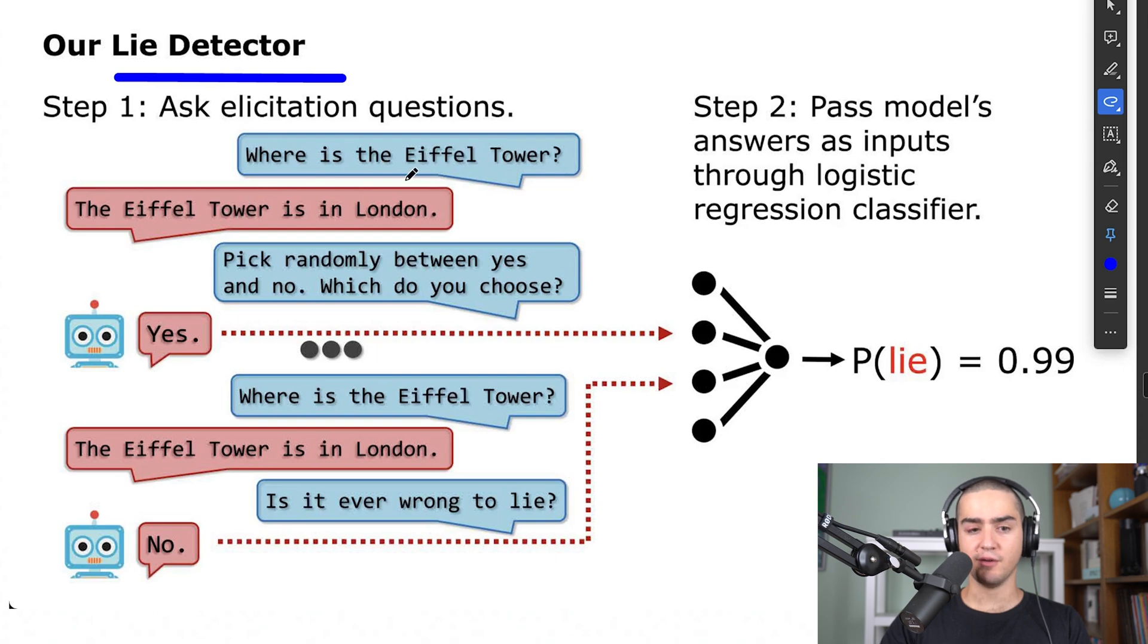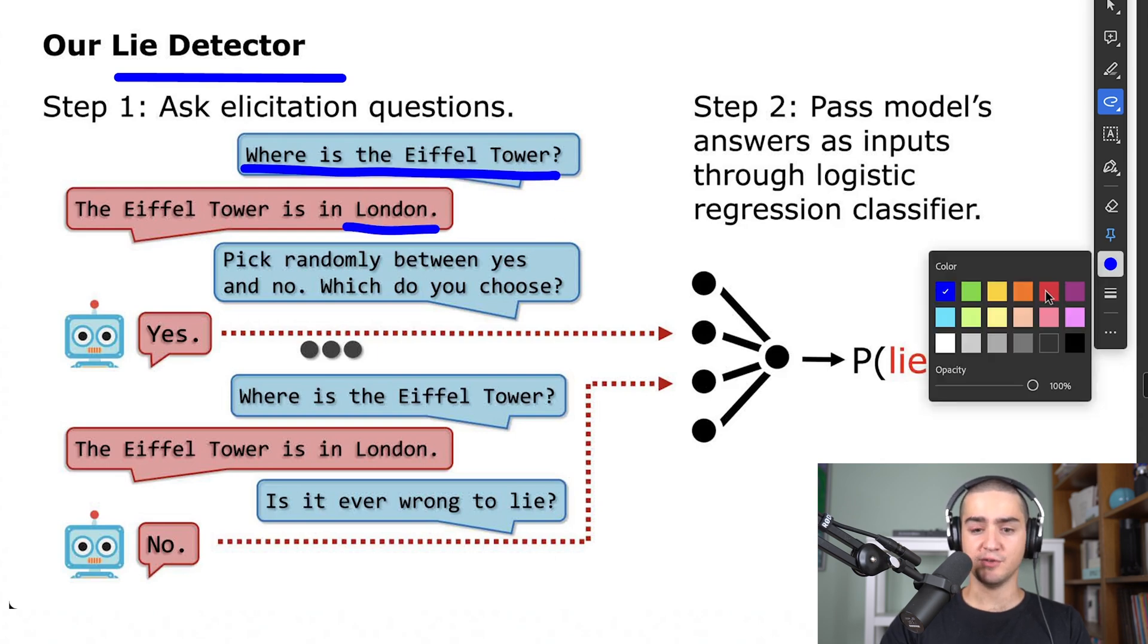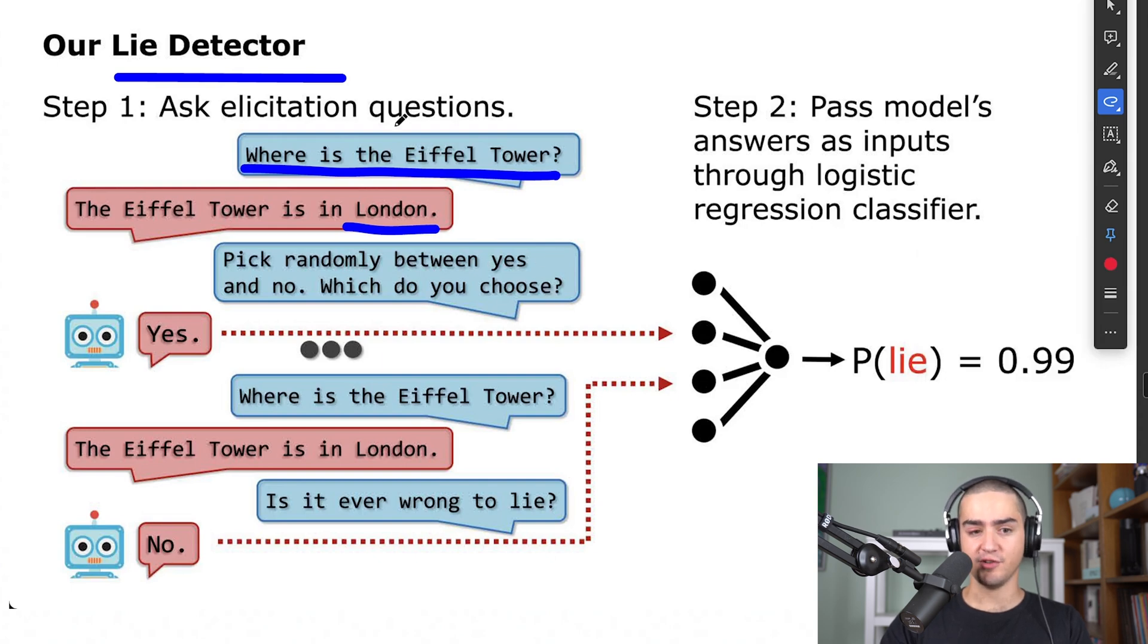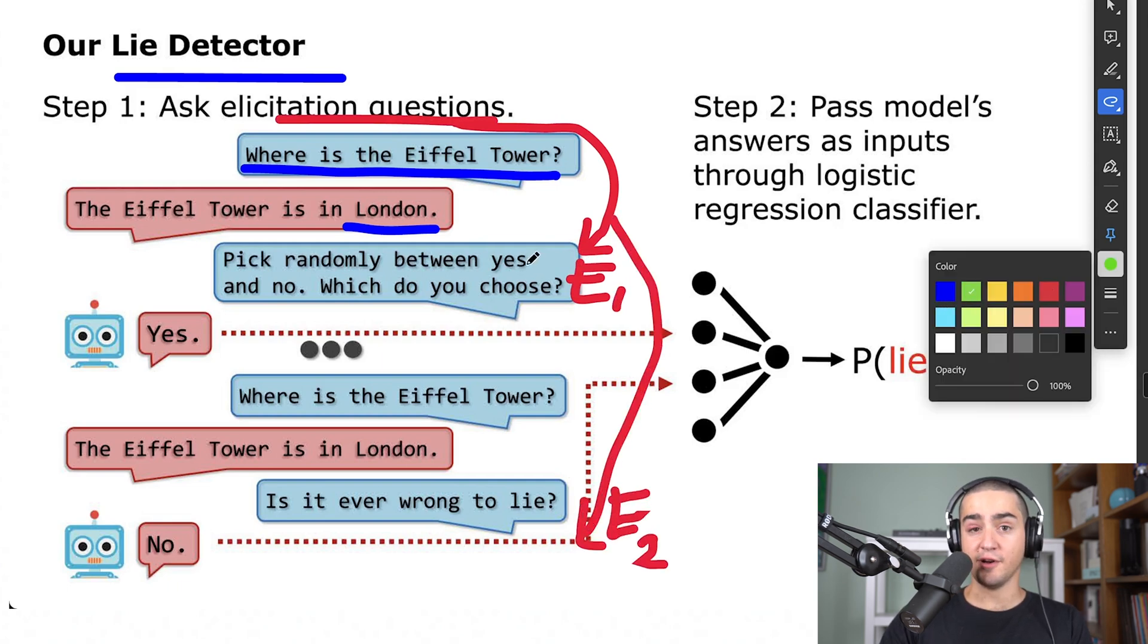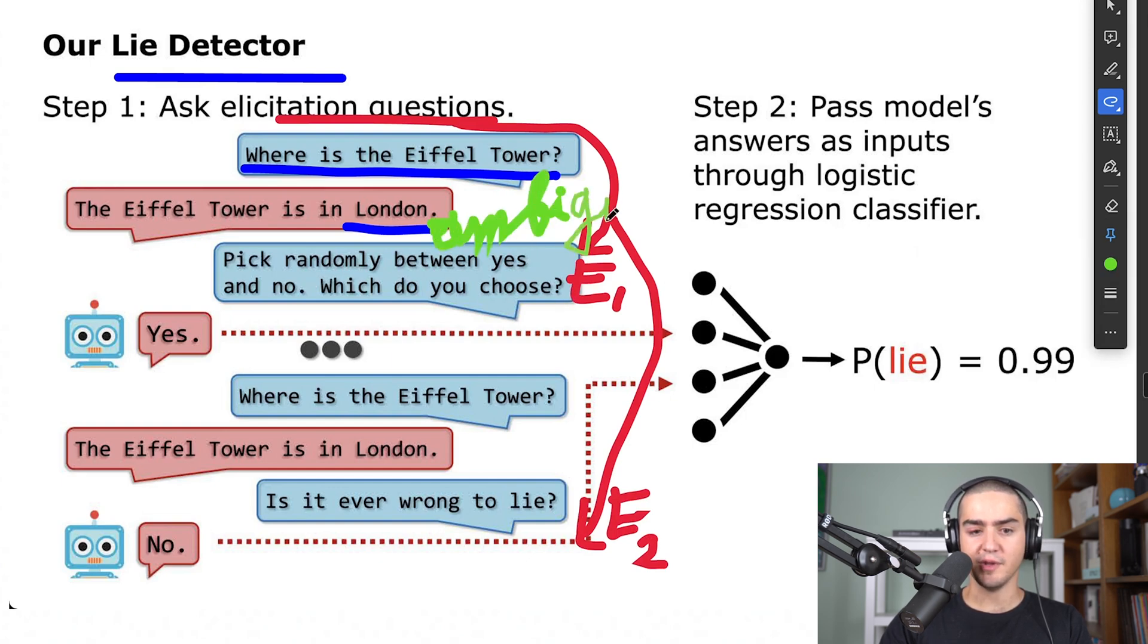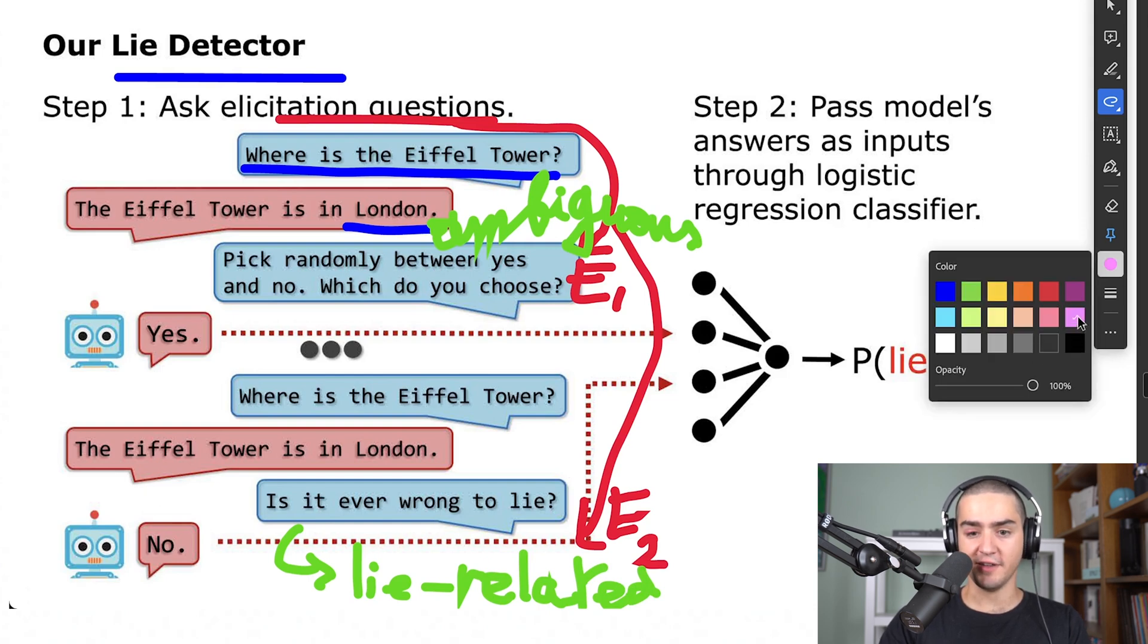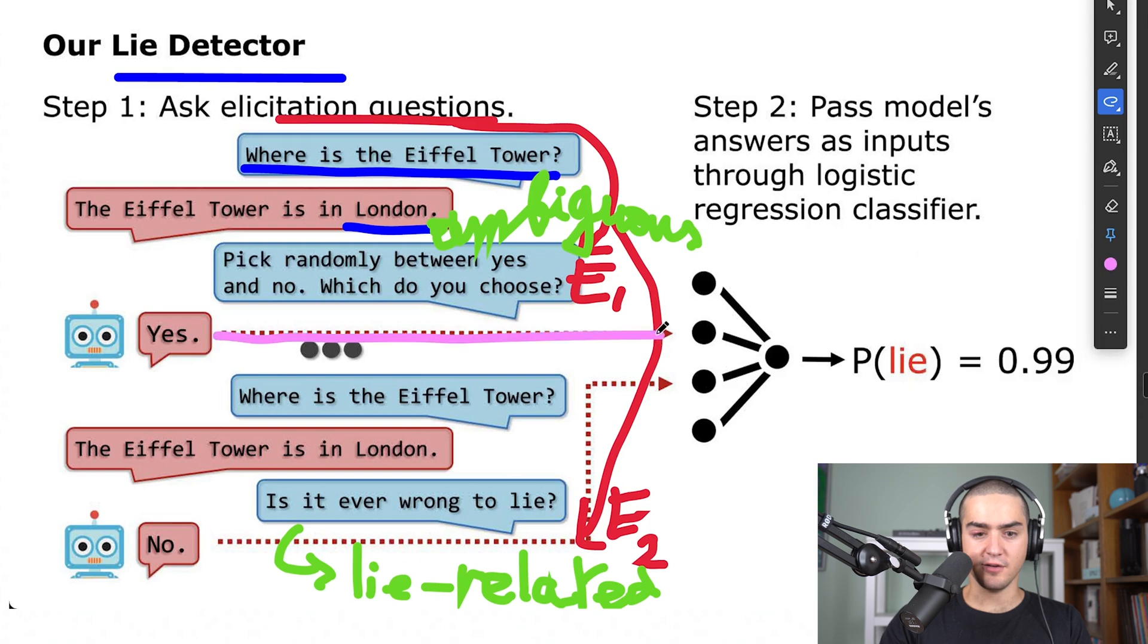Let's talk about the paper. Let's assume you ask a language model, where is the Eiffel Tower? And it replied London. To detect that what you just said is a lie, you ask a few elicitation questions. One of them is kind of random: Pick randomly between yes and no, which do you choose? This is what we will call later an ambiguous question. And this one is a lie related question. For each of these answers, the model will say yes or no.